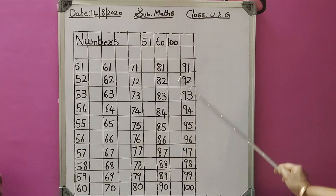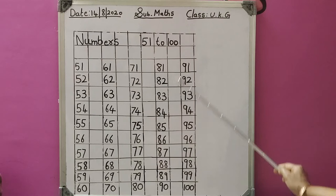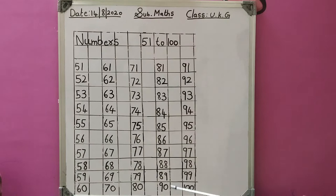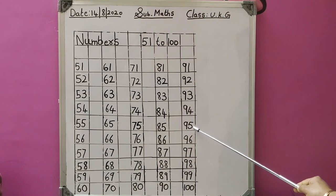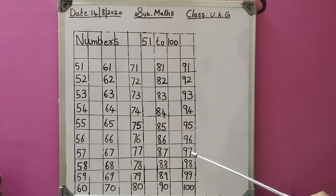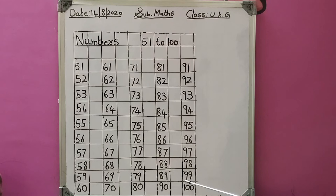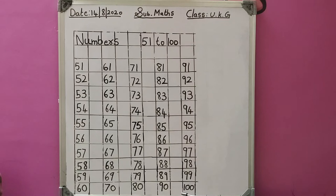Then leave one column. Write in the next column: 91, 92, 93, 94, 95, 96, 97, 98, 99. After 99, it's a 3-digit number: 1, 0, 0 — 100. After 99: 100.